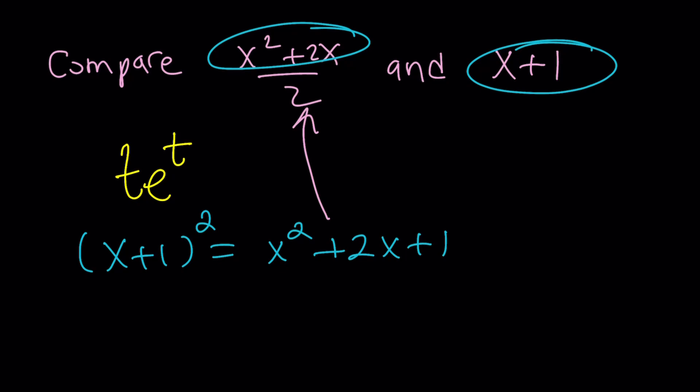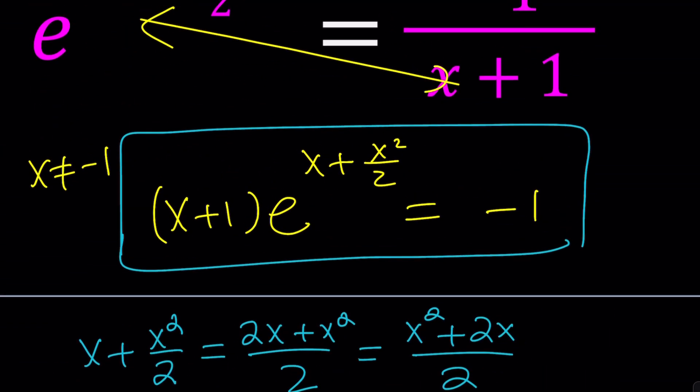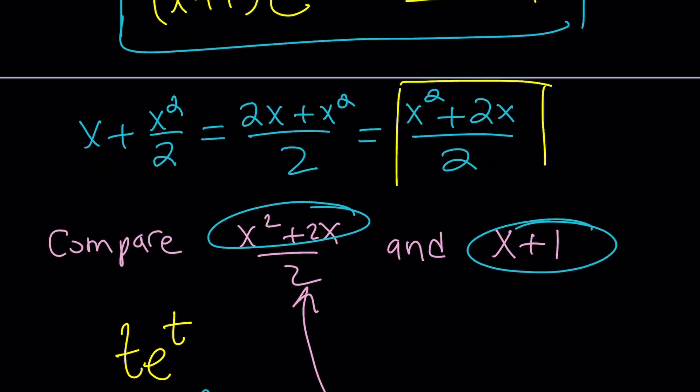Now, here's what we're going to do. Going back to our original equation, we have x plus 1 multiplied by e to the power. Now, I'm going to go ahead and change this because I already made a common denominator and switched around. So I'm going to go ahead and use this for my exponent. Make sense? Let's go ahead and do it.